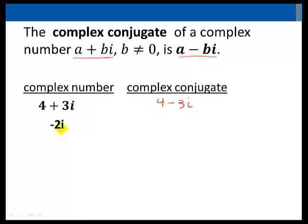Negative 2i, think of this as 0 plus negative 2i, would have a complex conjugate of 0 minus negative 2i, or 2i.